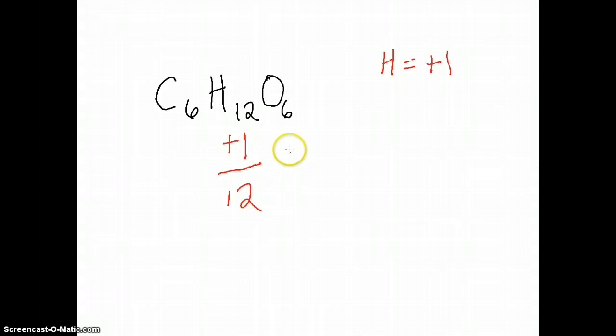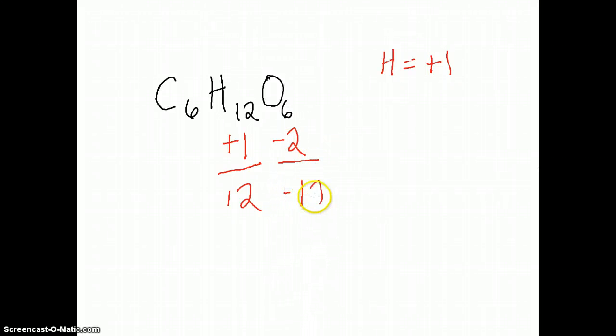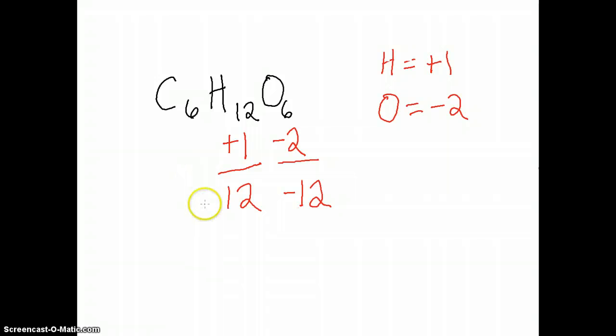The second rule we would encounter on the list is oxygen being assigned negative 2. We have to do that because carbon is not noted, so we'll have to figure that out from these two. Negative 2 we assign oxygen. From that we get negative 12. Oxygen is negative 2.